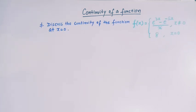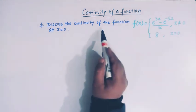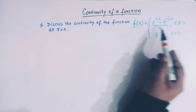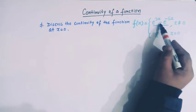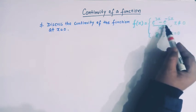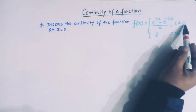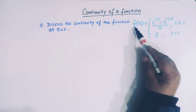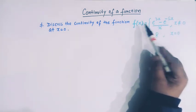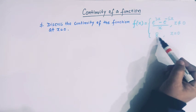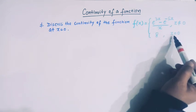Hello viewers, in today's class we are going to take up some problems in which we discuss the continuity of a function. So here we have the first problem: discuss the continuity of the function f(x) = (e^3x - e^-5x) / x when x is not equal to 0, and the value of f(x) is given as 8 when x is 0.